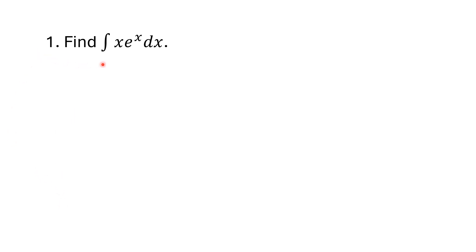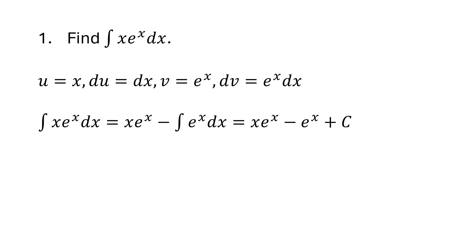Number one: find the integral of x·eˣ dx. Looking at that, you might say you really don't see how to do that, so we're going to do it by parts. What we have here is two functions, u and v, and the derivative of u·v involves one function times the derivative of the other, plus the second function times the derivative of the first.